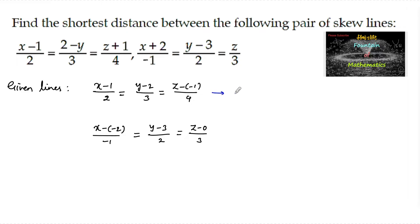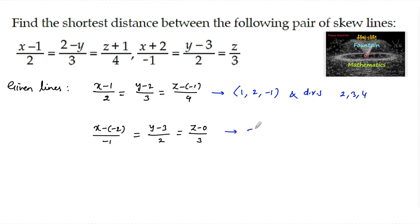Clearly, the first line passes through the point (1, 2, −1) and has direction ratios (2, −3, 4). The second line passes through the point (−2, 3, 0) and has direction ratios (−1, 2, 3).